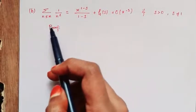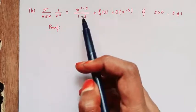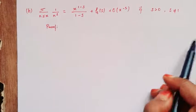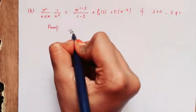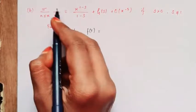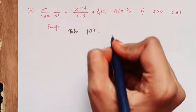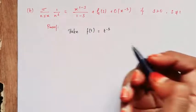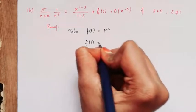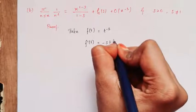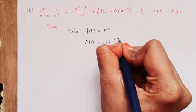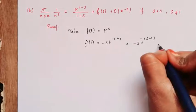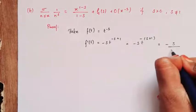The second part: the sum over n less than or equal to x of 1 by n power s equals x power (1 minus s) by (1 minus s), plus zeta of s, plus big O of x power minus s, for s greater than 0. For this I am taking f(t) equal to t power minus s, since the function is 1 by n power s. We solve this part also using the Euler summation formula, so we need f'(t): f'(t) equals minus s times t power (minus s minus 1), that is minus s divided by t power (s plus 1).